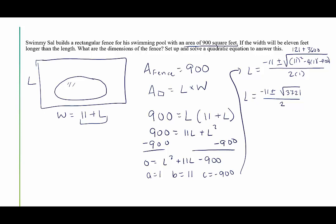Guess what? 3721 is a perfect square. Its root is 61. So we're going to say this is 61, and we can set up our two cases. We have L equals negative 11 plus 61 divided by 2, and L equals negative 11 minus 61 divided by 2. Here we get 50 divided by 2, which is 25. Here we get negative 72 divided by 2. Wait a minute. We can't have a negative length, so we're going to throw this one out, and we're done.